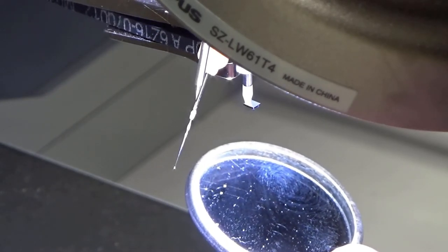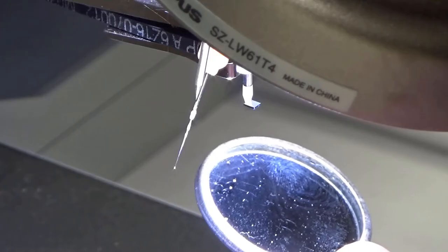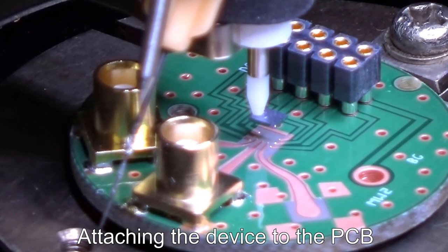Then, we carefully align the device electrodes to the contact points and place the device on the PCB.